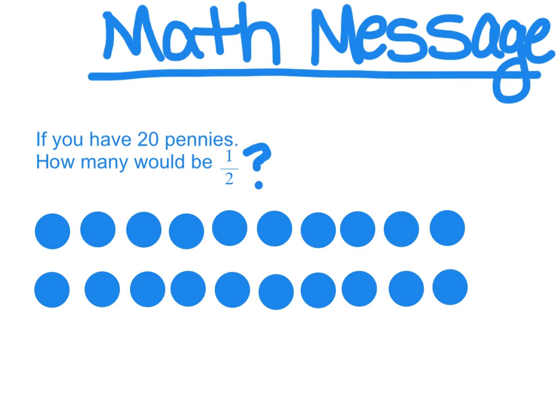So those aren't necessarily pennies in my picture, but they do represent pennies. So if I have 20 so-called pennies, how many would be one half? Well, one way that I could do that is I could divide it into two groups and make sure that I have the same number in each group. And so in this case, one half of 20 would be 10 pennies.